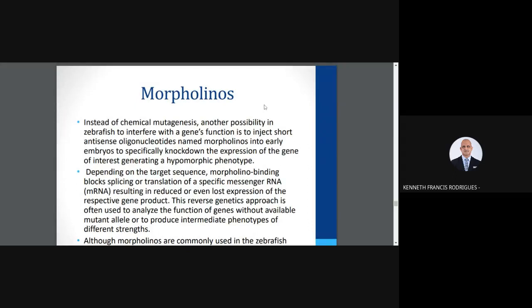Another way to study gene expression in zebrafish is by utilizing morpholinos. When you use a chemical mutagen, you are altering the genome. But if you want to reduce the expression of a transcript, you can use a morpholino — a molecule that interacts with RNA. You introduce a morpholino into the embryo by microinjection; if a particular RNA is silenced, it will be reflected in the respective phenotype. This approach is utilized in the context of reverse genetics in zebrafish.